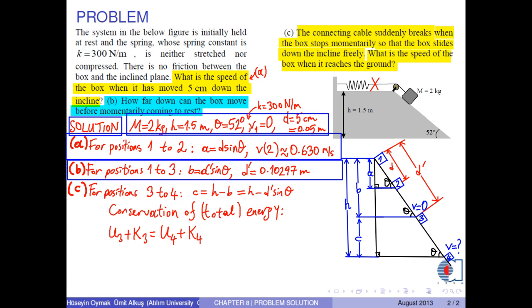We choose point 4 as the zero potential energy level. Then, the potential energy of the box at point 3 becomes M times G times C. The kinetic energy of the box at this point is zero since it stops momentarily at this point.